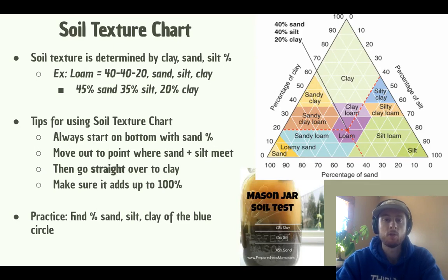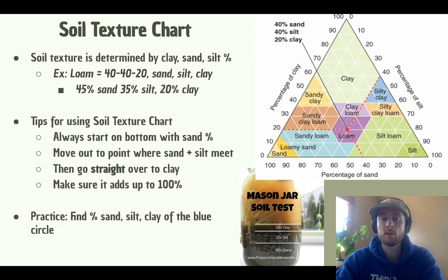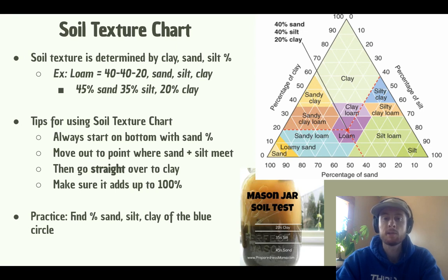Now we'll talk about the soil texture chart and how to use it. All soils are made up of sand, silt, and clay, but pretty much no soil is just pure sand, silt, or clay — all soil contains some mixture of the three. Because the percentage of sand, silt, and clay determines texture and porosity, it's the main way we classify different types of soil. To calculate the texture of a soil sample, you can set it in a jar of water and let it settle out overnight. Because the different particles have different densities, you'll be left with a layer of sand, silt, and clay that you can measure to determine the percentage of each.